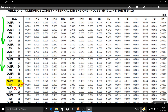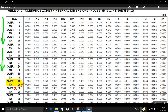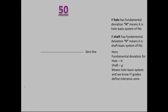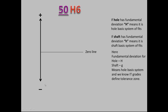The zero line corresponds to the basic size — here the basic size is 50, which falls in the diameter step 40 to 50. Above the zero line, the deviation will be positive and the size of the component increases as we go up. Similarly, below the zero line, the deviation will be negative and the size of the component decreases as we go down.